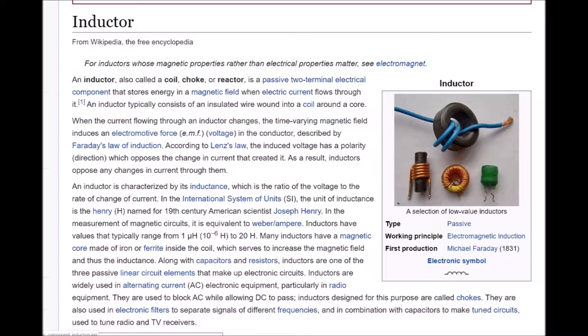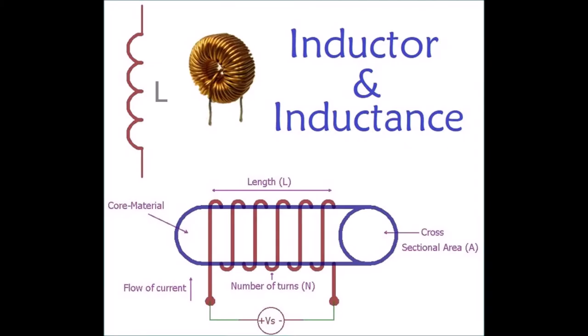As a result, inductors oppose any changes in current through them. An inductor is characterized by its inductance, which is the ratio of the voltage to the rate of change of current.